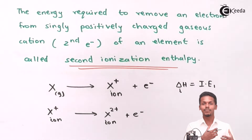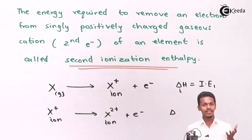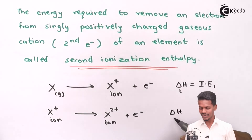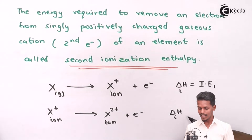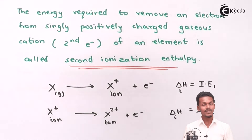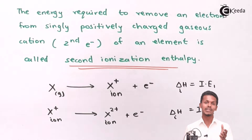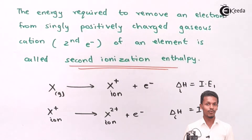This process of removing the second electron continues, and the energy required to remove this second electron is known as ionization enthalpy 2, or the second ionization enthalpy. It is easy to understand. The key comparison is that the second ionization enthalpy is always greater than the first ionization enthalpy — and that is what I want to explain.